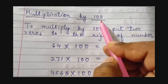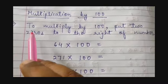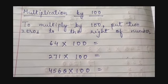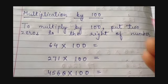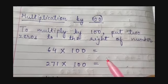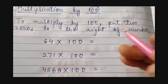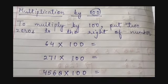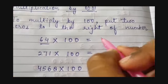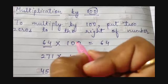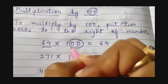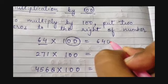Now, whenever you have to multiply any number by 100, again what you need to do is: to multiply by 100, put 2 zeros to the right of the number. You simply add 2 zeros because there are 2 zeros in 100. So whenever you are multiplying any number by 100, you will just be putting 2 zeros to the right. What is your multiplicand here? It is 64. Here you have written 64, and you multiply by 100 — which has 2 zeros.